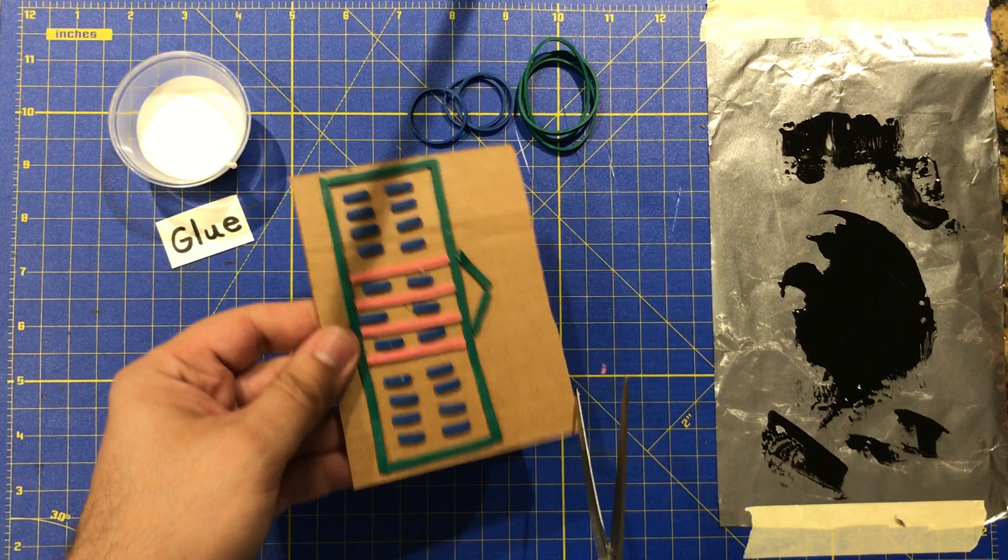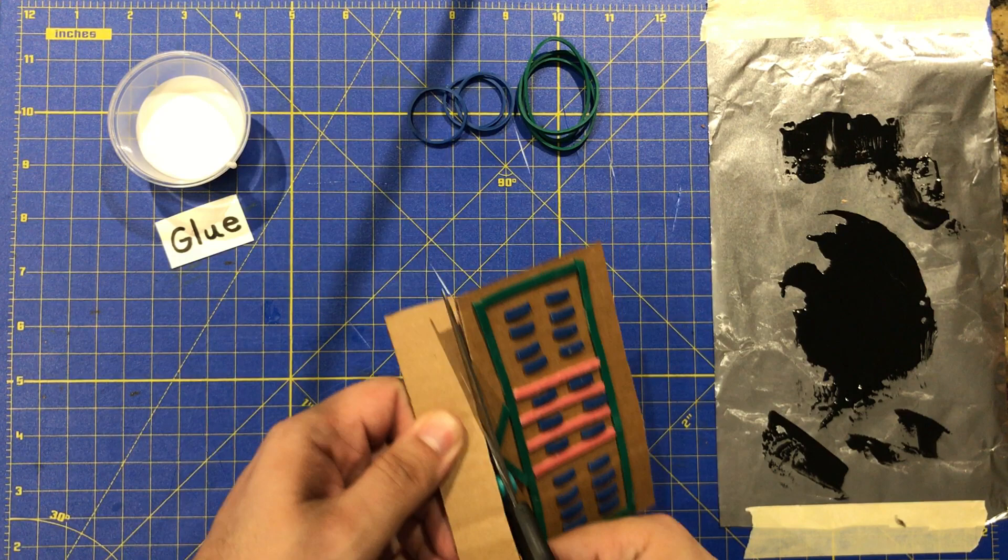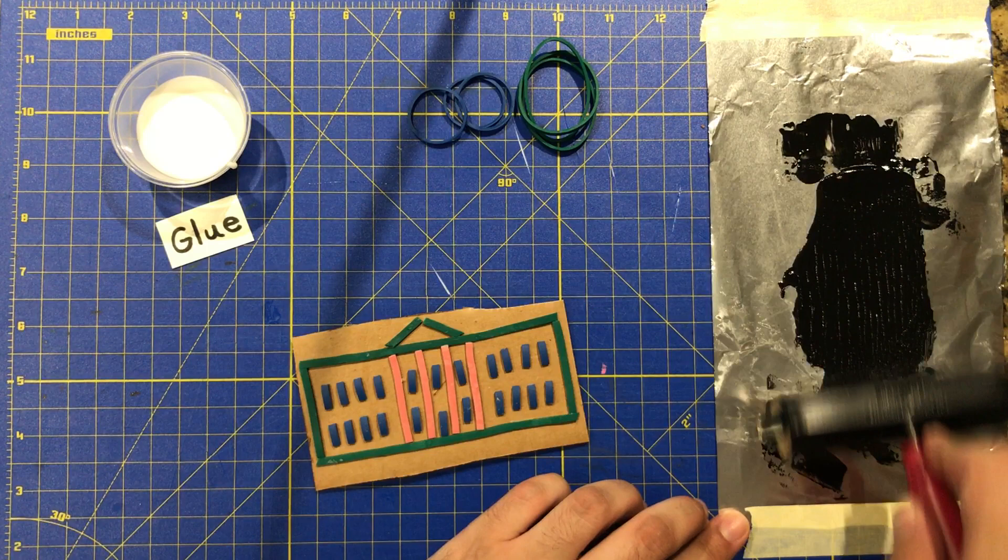I'm going to cut a little bit off the top. That's a little bit better with the paper. I'm going to prepare my brayer.